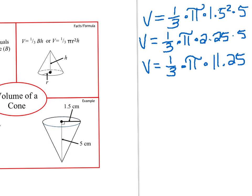Multiply 2.25 by 5 to get 11.25. Multiply that 11.25 by the approximation of pi, which is 3.14.